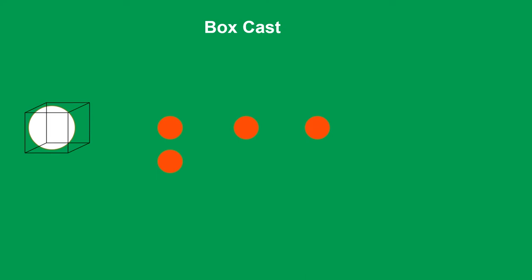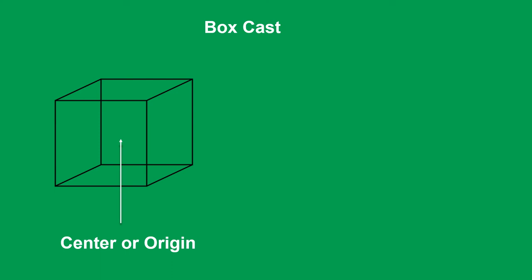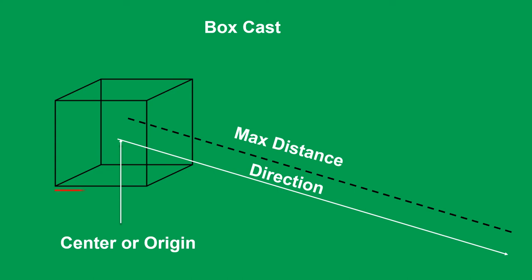Now let's move to BoxCast. Instead of casting a spherical geometry, we are casting a 3D box geometry, and everything is the same as with SphereCast except the parameters. To cast a 3D box into your scene, you provide: the center or origin, the direction, the maximum distance, and the half-dimensions of the box.